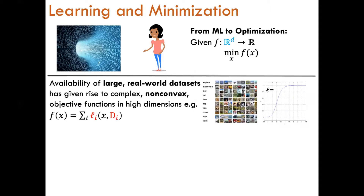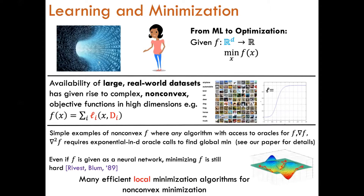In many machine learning applications, the choice of model and loss function that the learner seeks to minimize on the data set can lead to a high-dimensional non-convex landscape, as this allows for a more powerful model. Since the objective function f is non-convex, it's not in general computationally feasible to find the global minimum. One reason for this is because there are simple classes of non-convex functions f where any algorithm given access to oracles for f and its gradient or Hessian requires a number of oracle calls which is exponential in the dimension d.